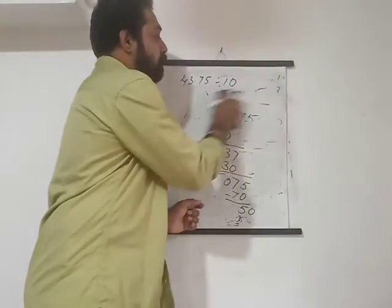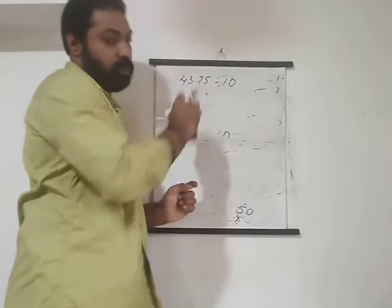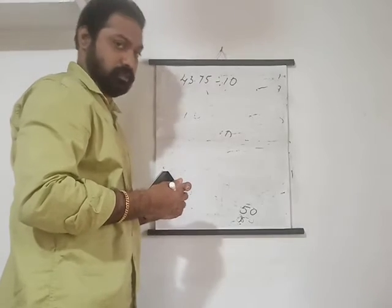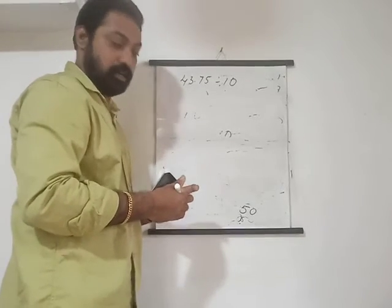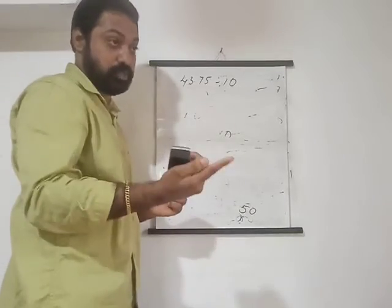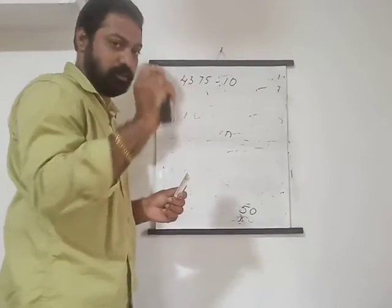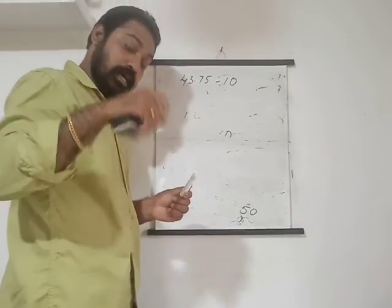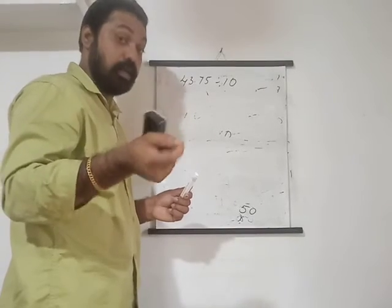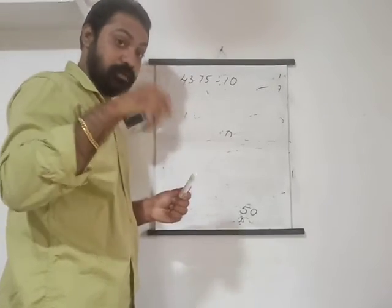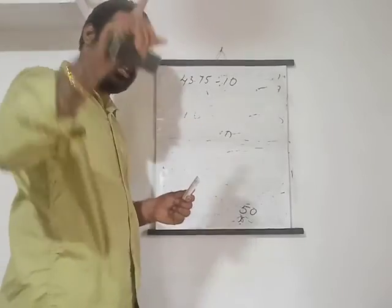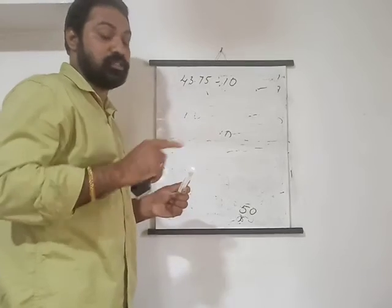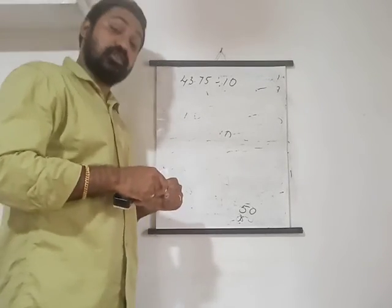That is the division of decimal numbers by 10, 100, and 1000. To keep these rules in your mind, try writing one example each for: multiplication of a decimal by a whole number, multiplication of a decimal by a decimal, division of a decimal by a whole number, and division of a decimal by a decimal. Writing one example of each will help you remember. That's all for today, thank you.